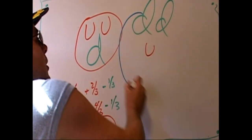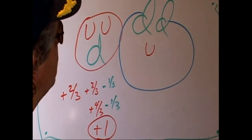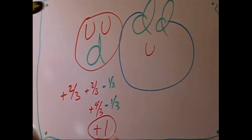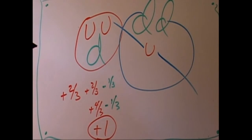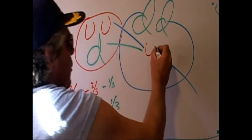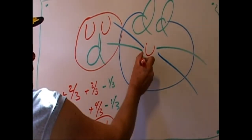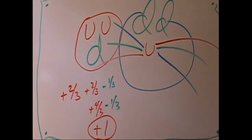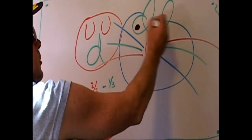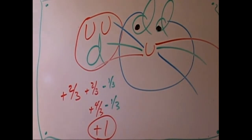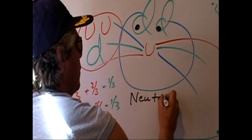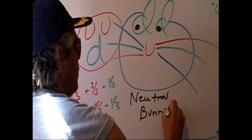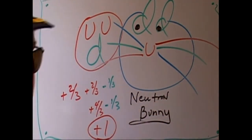Neutrons are more massive — we'll draw it bigger. What holds the quarks together are called gluons. Each quark gets a gluon; there are three quarks, so that's six gluons. Let's make a cartoon character out of this — put some eyeballs in there. This is called the neutron bunny. Third graders have been drawing this for ten years now.